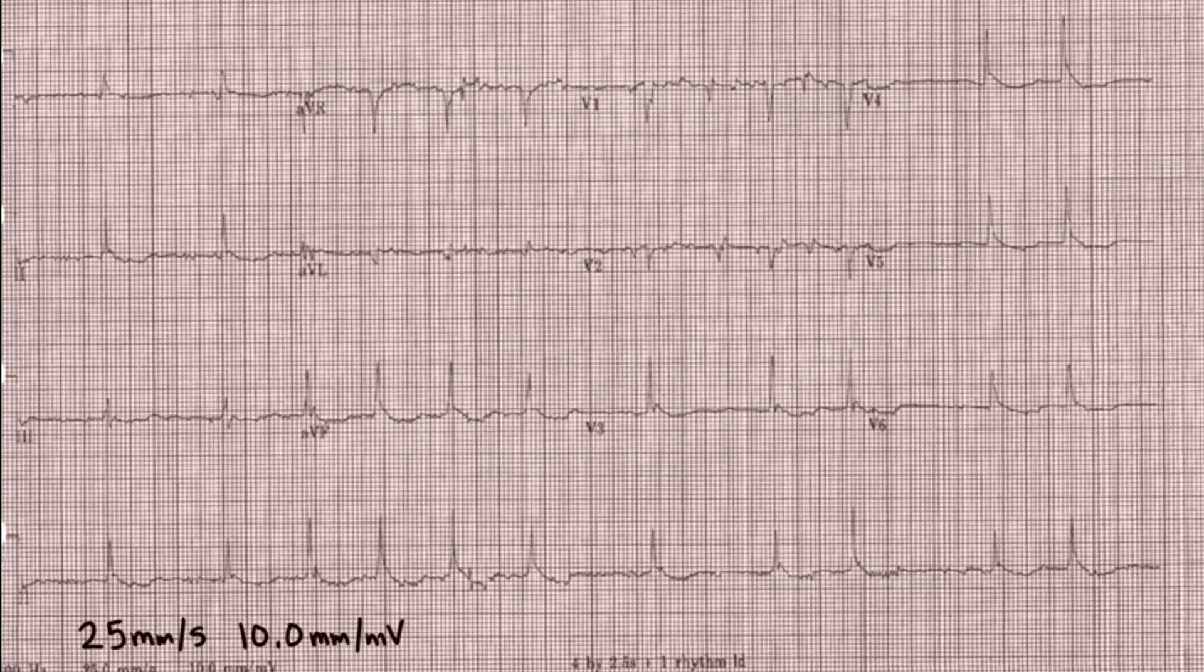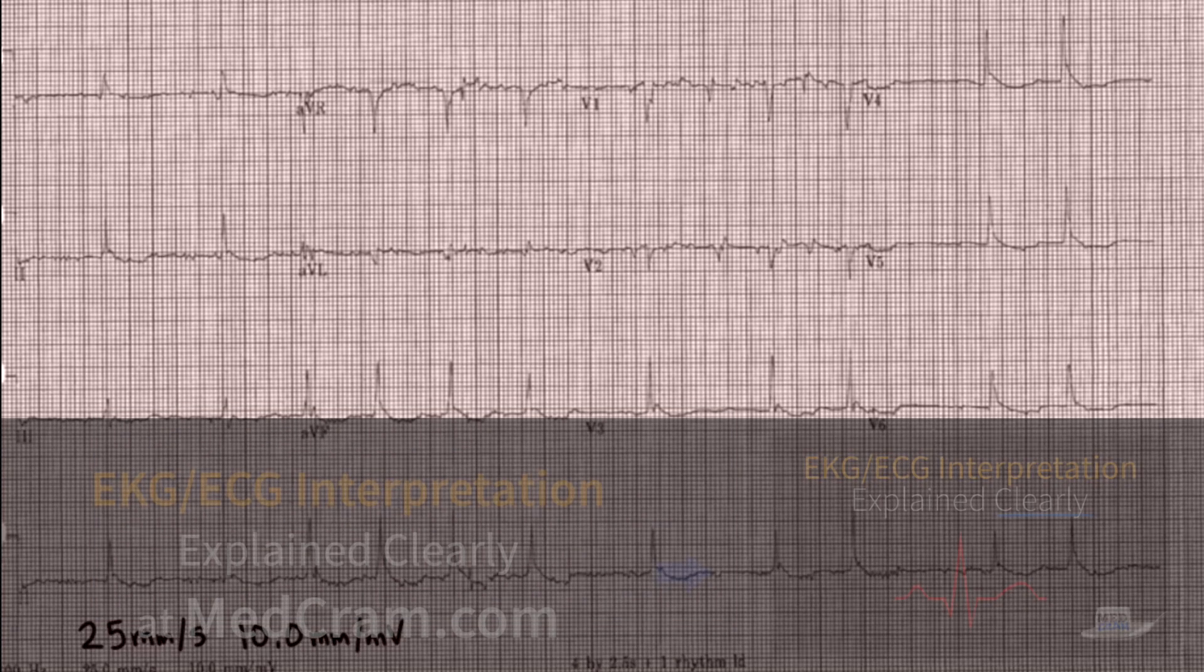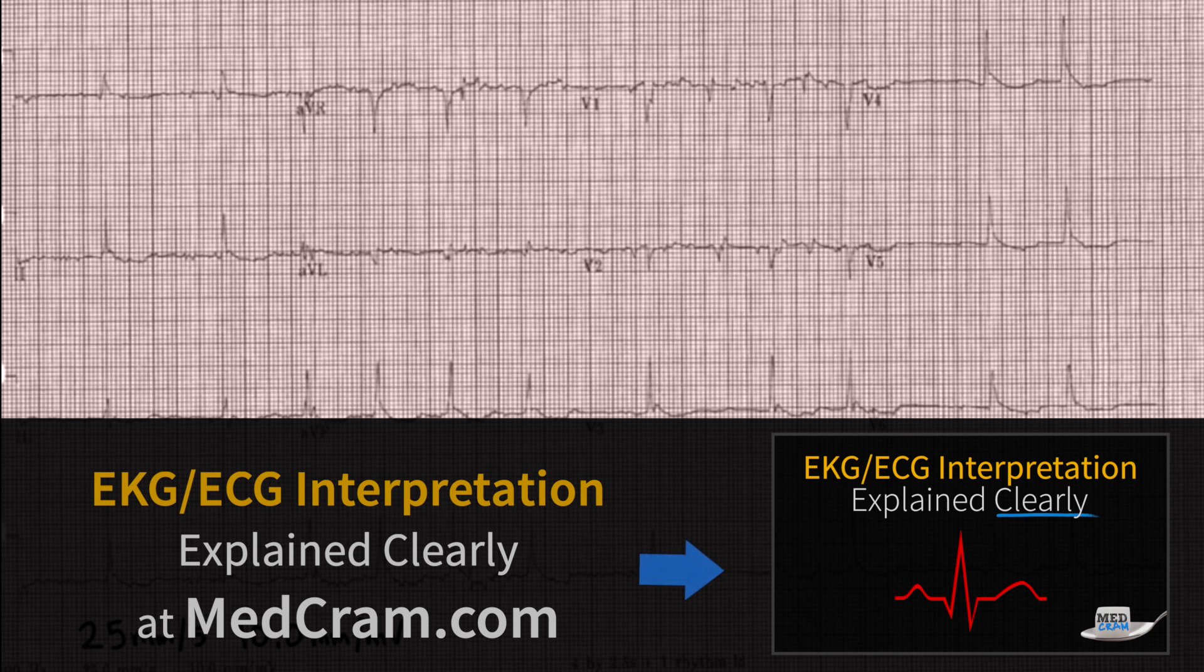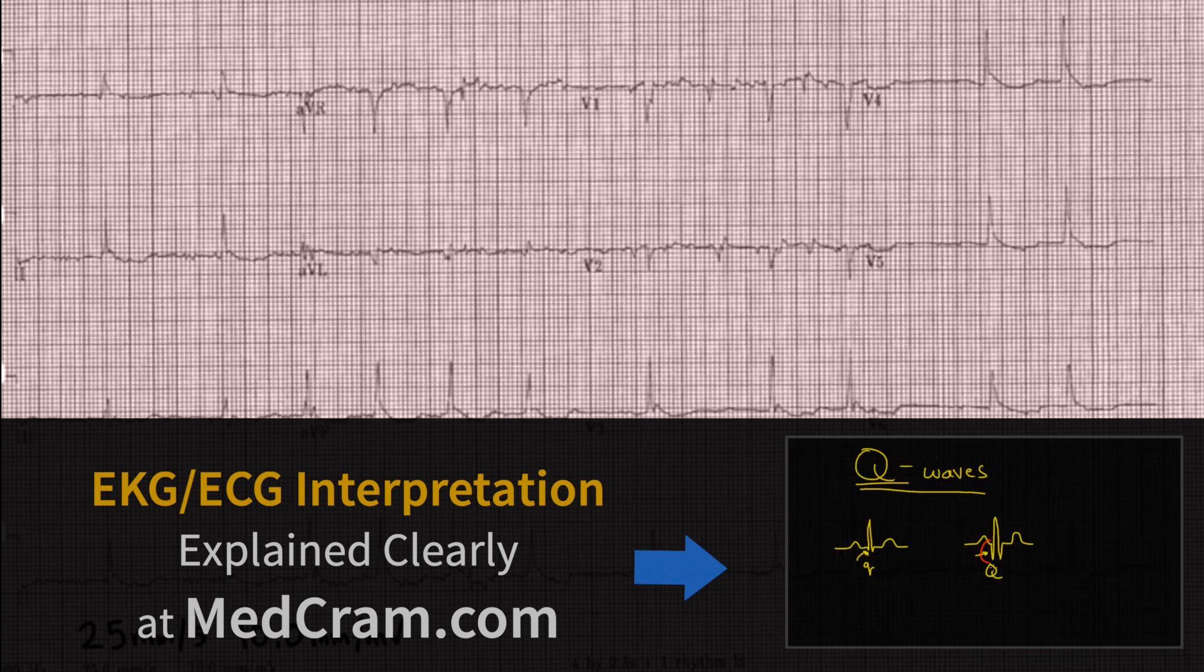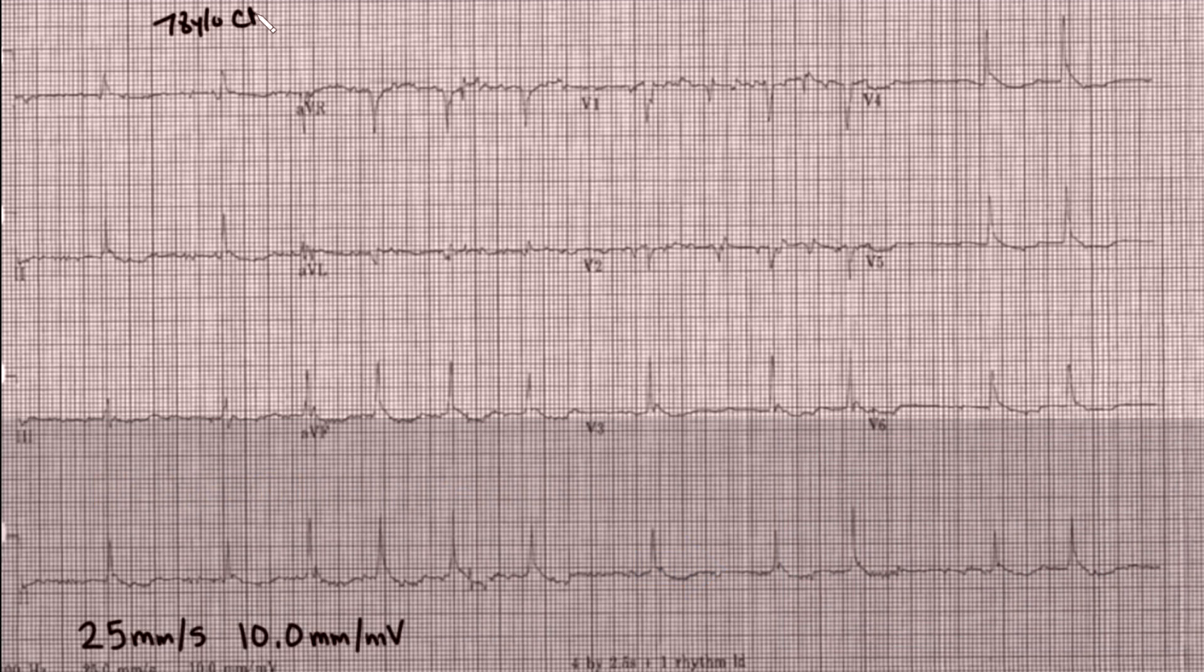Welcome to another MedCram lecture. We're going to go over this EKG just like we do in our EKG course at MedCram.com. The first thing that we want to do is get the history, and this happens to be a 78-year-old Caucasian male found down in a nursing home with a temperature of 85 degrees Fahrenheit.